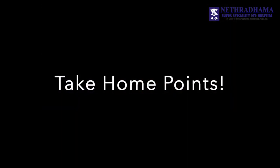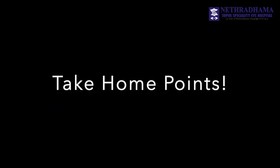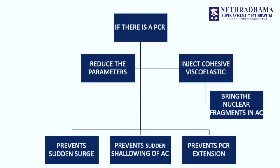Some take-home points from this video: when you are removing the last fragment, it is better to reduce the flow rate and vacuum so that there is no sudden surge and upthrust of the PC — this will prevent a PCR. You can also stop, put in some viscoelastic before removing the last piece, bring it into the anterior chamber, and emulsify it there.